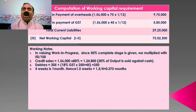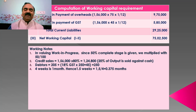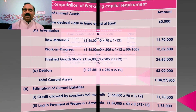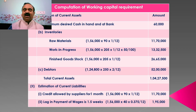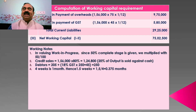By adding all current liabilities, the total current liabilities amount is determined as Rs. 29,25,000. Step number three, determination of net working capital. Net working capital is equal to total current assets minus total current liabilities. Here, total current assets are Rs. 1,04,27,500 minus total current liabilities Rs. 29,25,000. Therefore, we got the net working capital amount of Rs. 75,25,000.